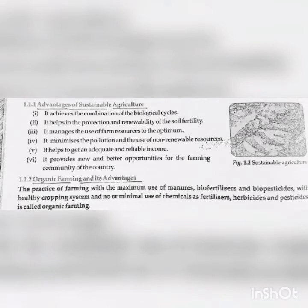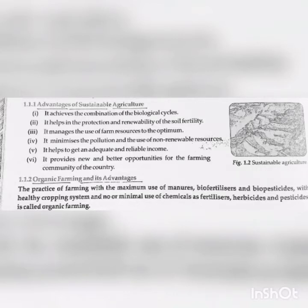The successful management of agricultural resources to satisfy the changing human needs while maintaining or enhancing the quality of environment and conserving the natural resources is called sustainable agriculture. Sustainable agriculture includes practices like crop rotation, reservoir control of pest and soil erosion, mixed farming, intercropping and integrated agriculture. Advantages of sustainable agriculture: first, it achieves the combination of the biological cycles; second, it helps in the production and renewability of soil fertility; third, it manages the use of farm resources to the optimum; fourth, it minimizes the pollution and the use of non-renewable resources; fifth, it helps to get an adequate and reliable income; sixth, it provides new and better opportunities for the farming community of the country.